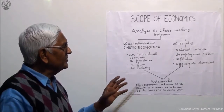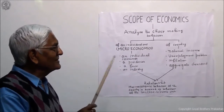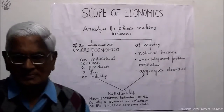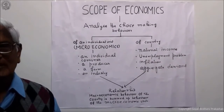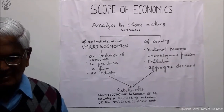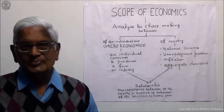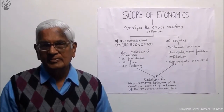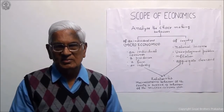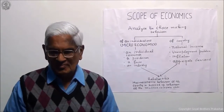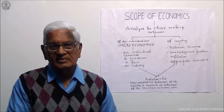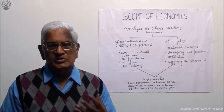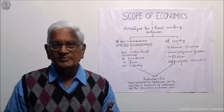Basically, a study of economics is simply the analysis of choice-making behavior. What is choice-making behavior? You have two options, three options, four options — you cannot adopt all the options at the same time. You have to make a choice: what is the best option before you? Why does this problem arise we will study a little later, but it's basically choice-making behavior which you study in almost every topic of economics.